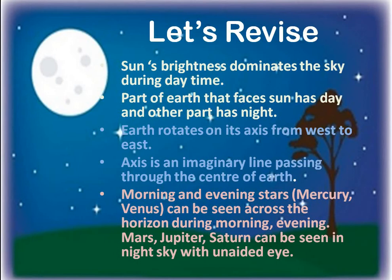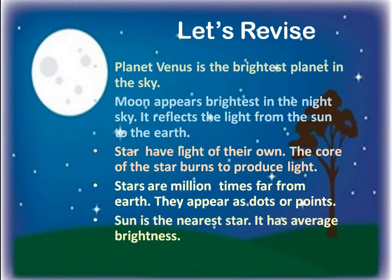Let's revise before we end. The sun's brightness dominates the sky in the daytime. The part of the earth that faces the sun has day and the other part has night. Earth rotates on its axis from west to east, and the axis is an imaginary line. Morning and evening stars are Mercury and Venus. Sometimes we can see Saturn and Jupiter with the unaided eye. Planet Venus is the brightest planet in the sky. Moon appears to be brightest in the night sky. Stars have light of their own and are millions of times far from earth, which is why they appear as dots. Sun is our nearest star and is of average brightness.